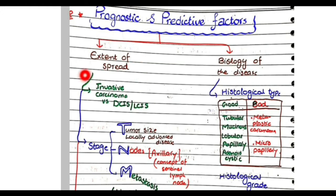Let us discuss the extent of spread. The first factor that determines the prognosis is whether it is invasive carcinoma versus carcinoma in situ. Obviously, carcinoma in situ is a precancerous lesion and will have a better prognosis, while invasive carcinomas have worse prognosis.